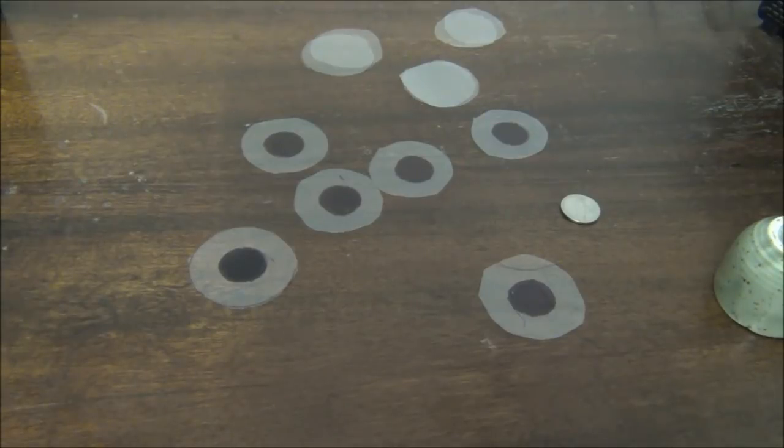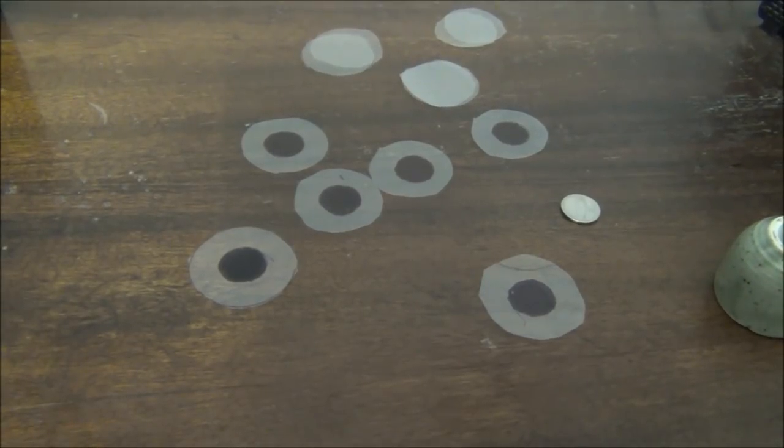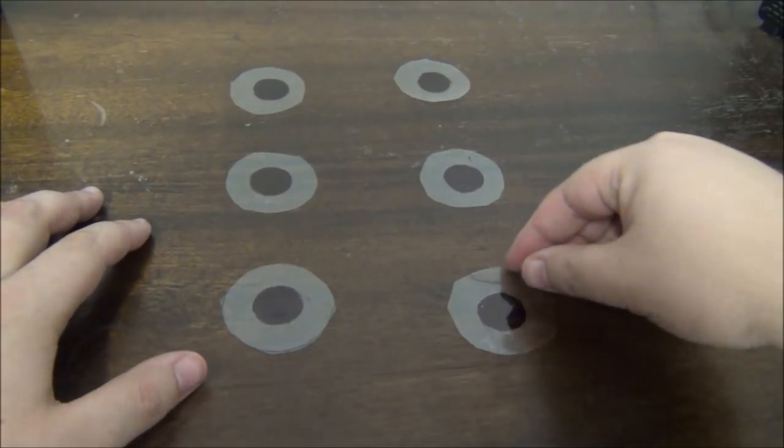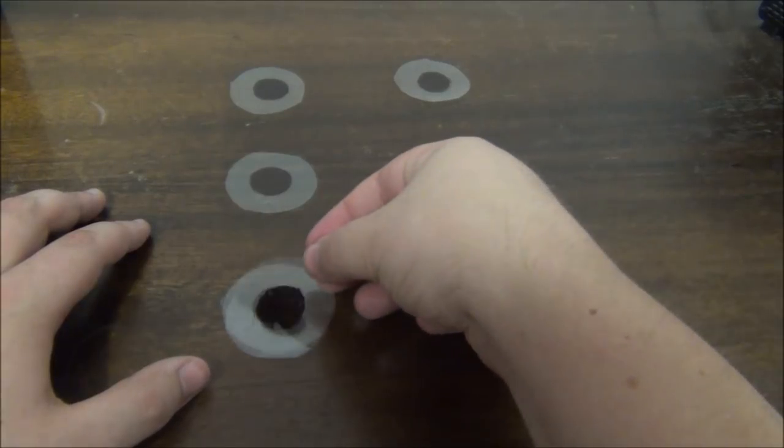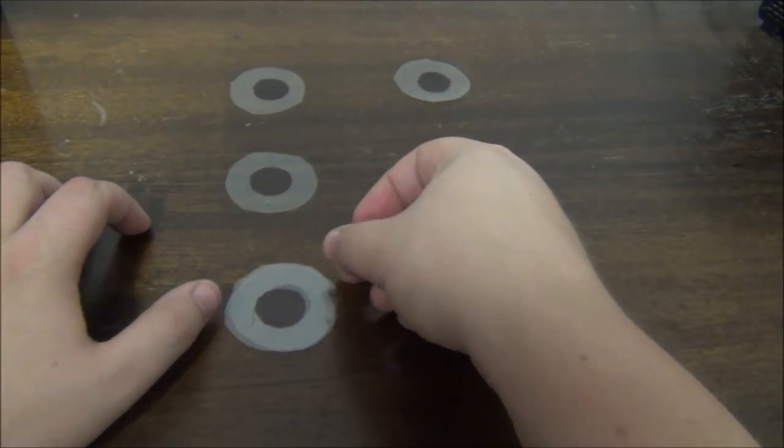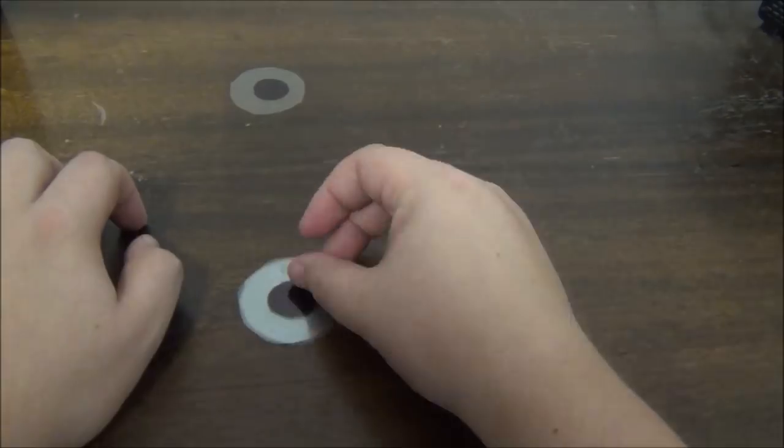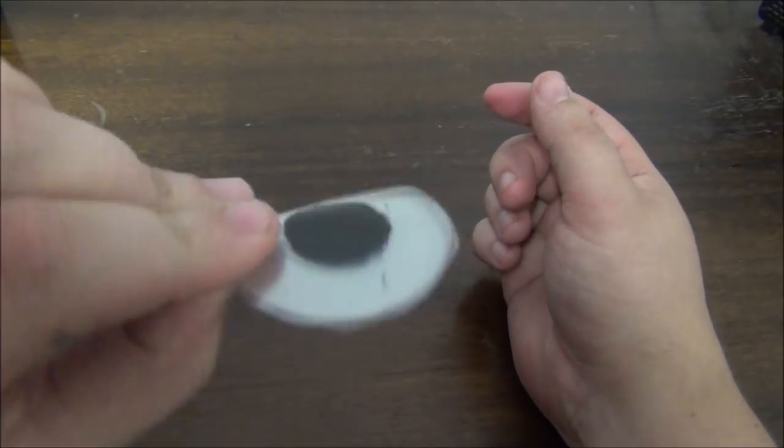Once we've got our filters made, it's time to stack and tape. When you're stacking your circles, try to line up the center spots so that they overlap as well as possible. If you shaded by hand, there's probably a little bit of irregularity at the edges. The good thing is that it doesn't make much of a difference.